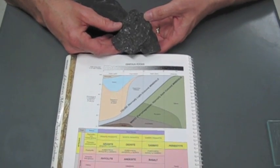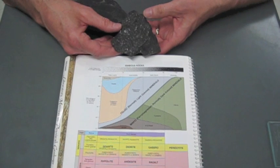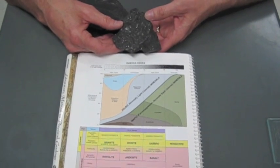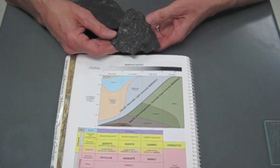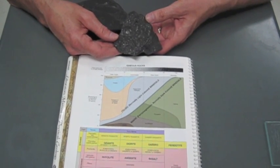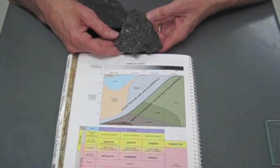So this is an igneous rock called gabbro. It's certainly common as an intrusive igneous rock, and I know it's intrusive because I can see all these large crystals in it. So it cooled slowly inside the crust of the earth.